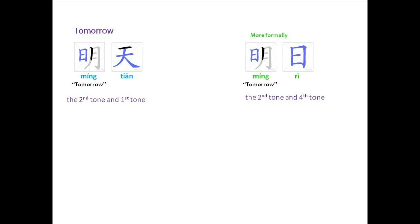Or more formally, you can say 明日 (míng rì). 明, the second tone, means tomorrow, and 日, the fourth tone, means day or sun.